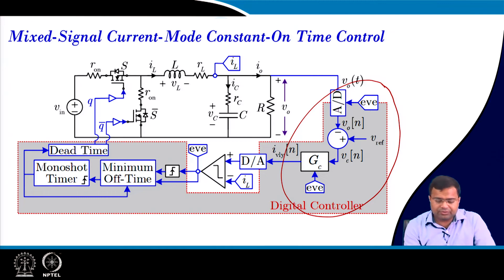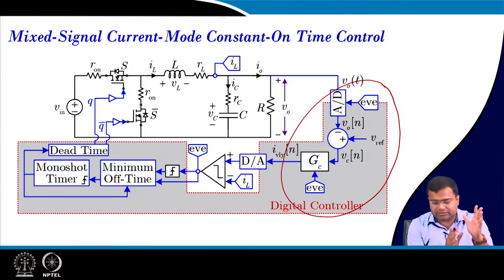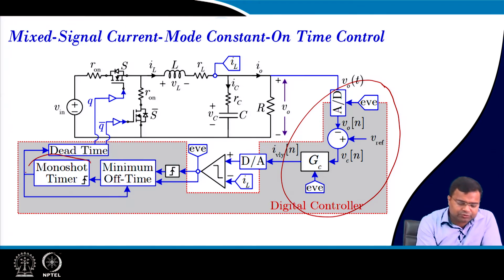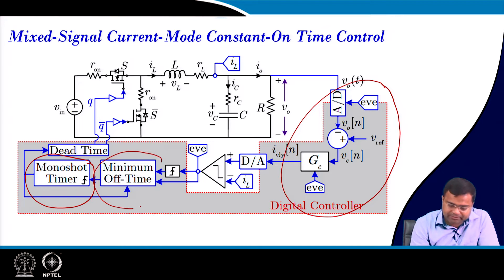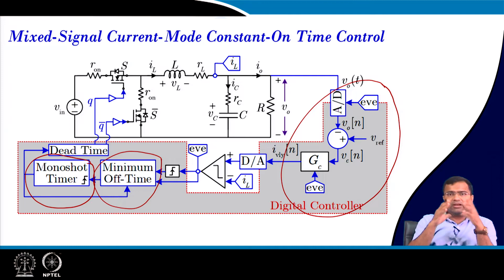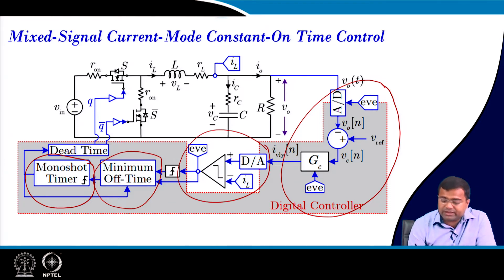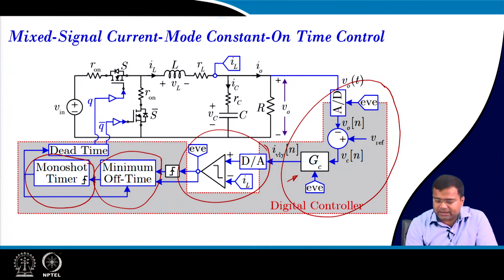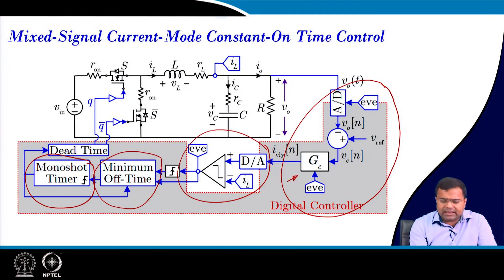We need to consider that in this architecture, a monoshot timer is used for constant on-time modulation. In addition, we need to consider the minimum off-time, because for practical realization this is mandatory for any commercial product. Since the current loop is in analog, we need a D-to-A converter. After the controller output, we use a DAC and then an analog comparator, whose output is used as an event trigger clock.